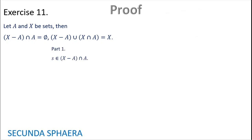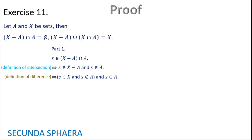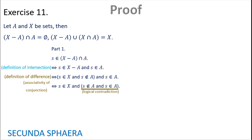Starting: S is in X without A intersection A. Using the definition of intersection, this is if and only if S is in X without A and S is in A. Using the definition of difference of sets, this is if and only if S is in X and S is not in A and S is in A. Using associativity of conjunction, we note that S is not in A and S is in A — one is the negation of the other, so they cannot both be true inside a conjunction. The conjunction is always false; this is a logical contradiction.